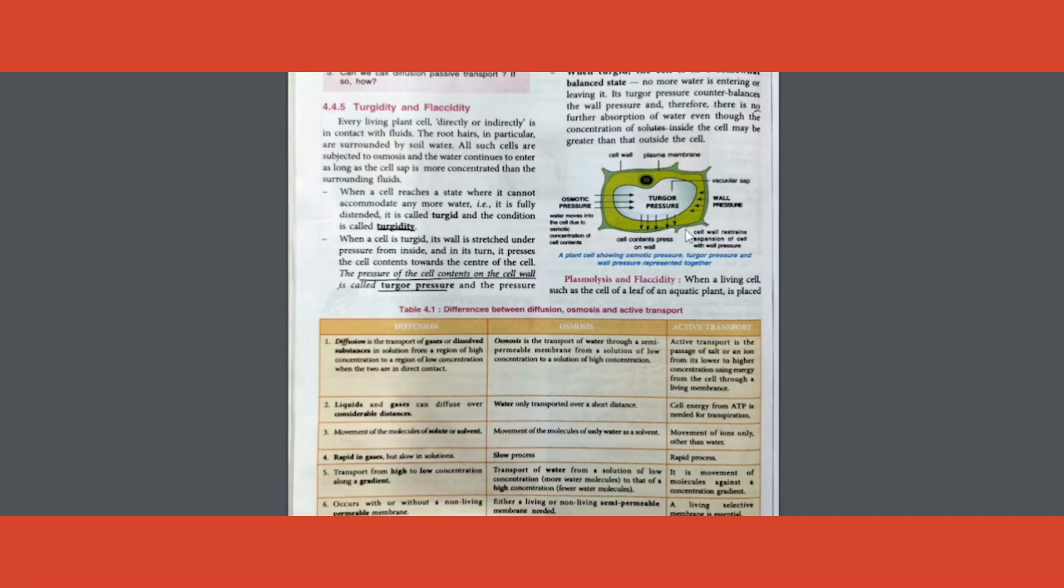First and foremost, what exactly is meant by turgidity? To know that, look at this picture. Here you can see there is a cell that is placed, and there are so many arrows going up and down. Till now we know to some extent that if you place a cell inside a hypertonic solution, water keeps going out of the cell.